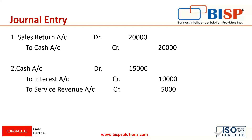The cash account is credited as the rule says credit what goes out. For the revenue entry, interest and service revenue are credited because the nominal account rule states: debit all expenses and losses, credit all incomes and gains. Since these are incomes, they are credited. The cash account, being a real account following the rule 'debit what comes in,' is debited because we are receiving cash into the business. This is the normal journal entry passed in accounting.